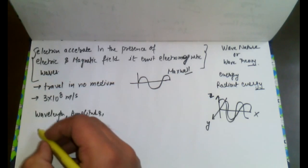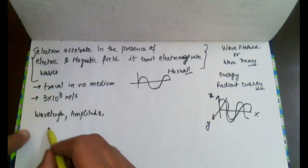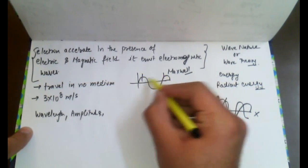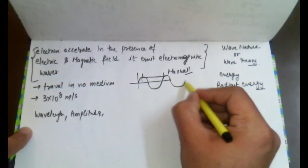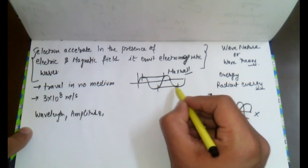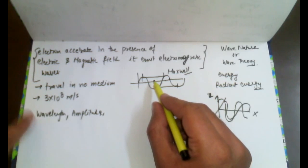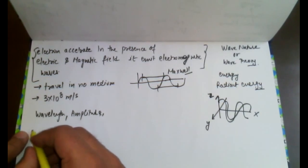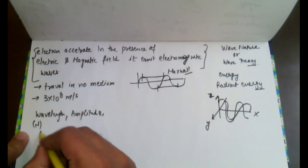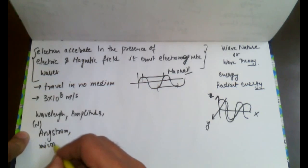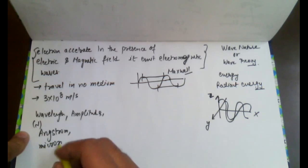When we talk about wavelength, we can define it as the distance between any two consecutive crests or two consecutive troughs. We represent wavelength as lambda. Its units are Angstrom or micron, which are smaller units of wavelength. One Angstrom equals 10⁻¹⁰ meters.